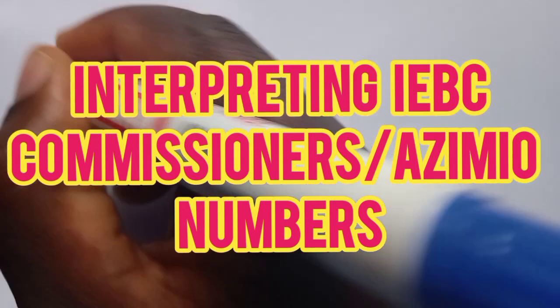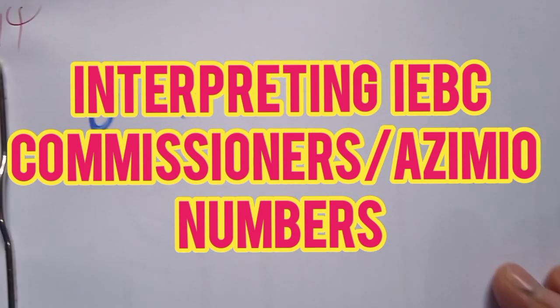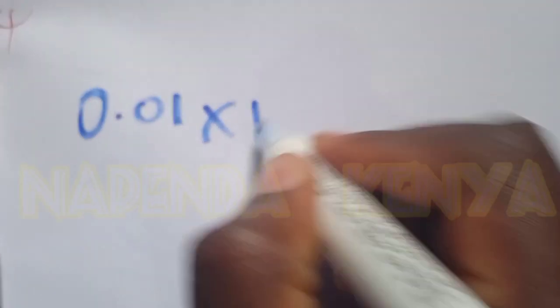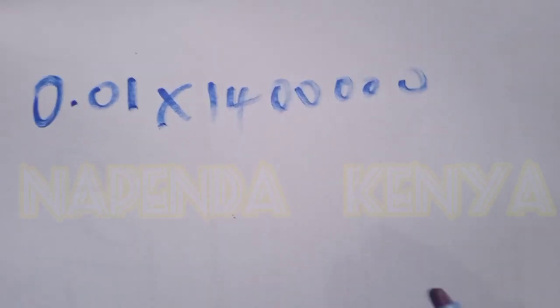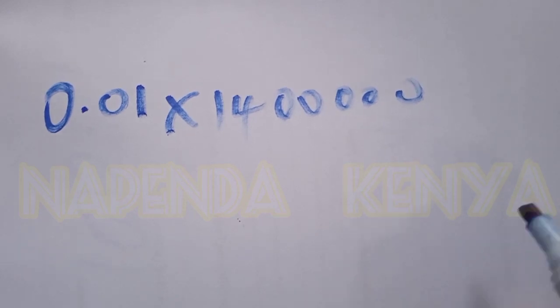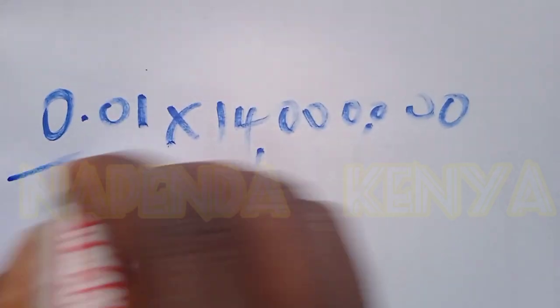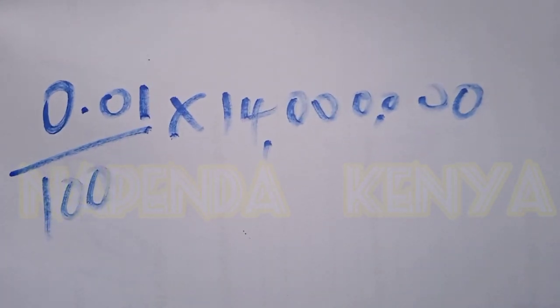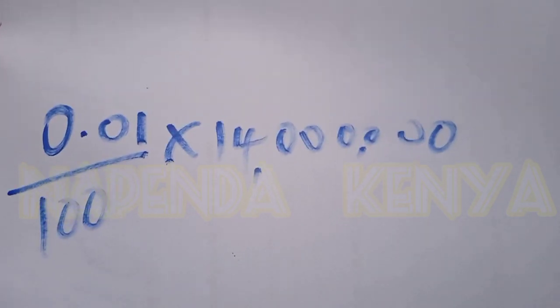So how much is 0.01% in presidential tally? What is 0.01% of 14 million? That is where the point of contention is. So 0.01%, that is 0.01 out of 100, is it 142,000? IEBC commissioners, is it 140,000?